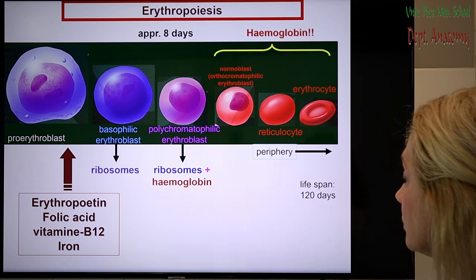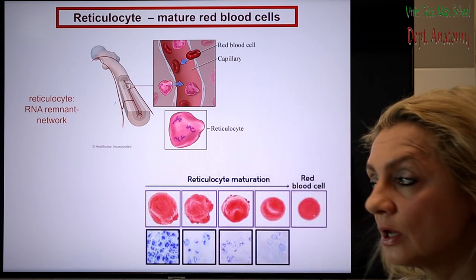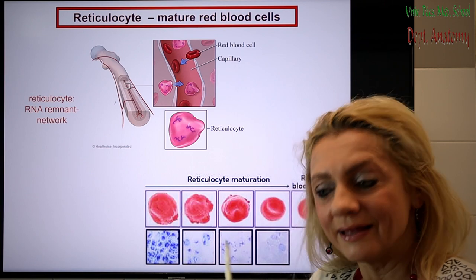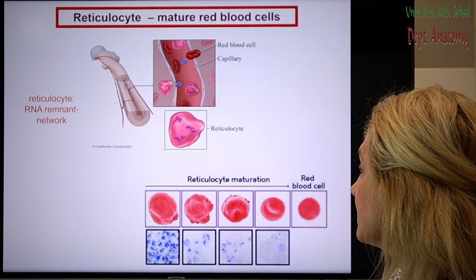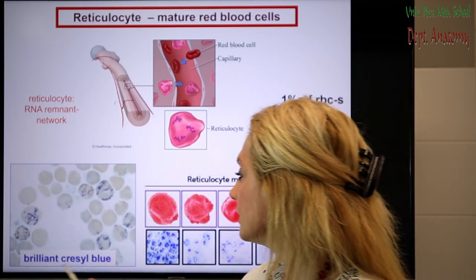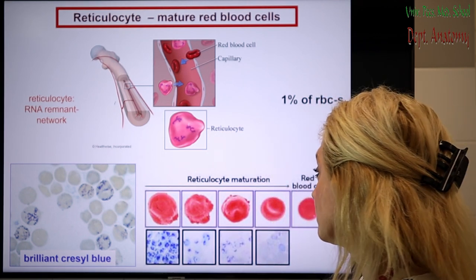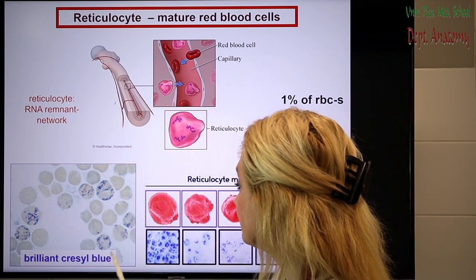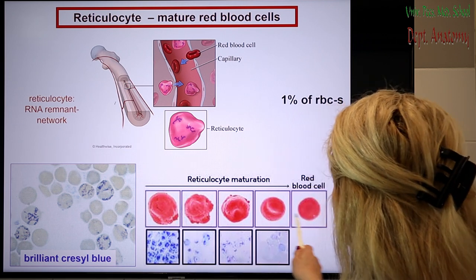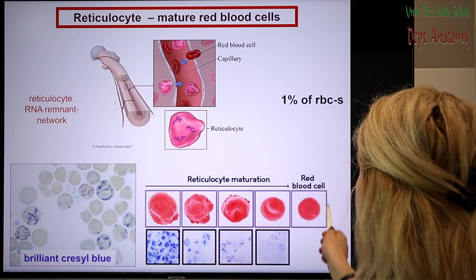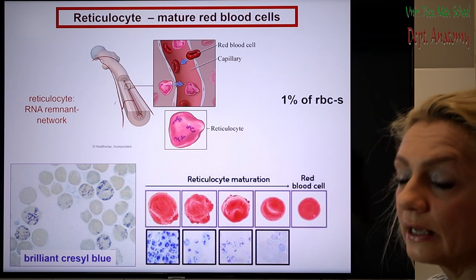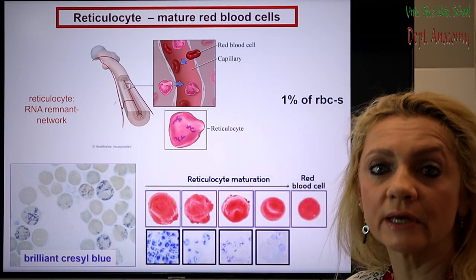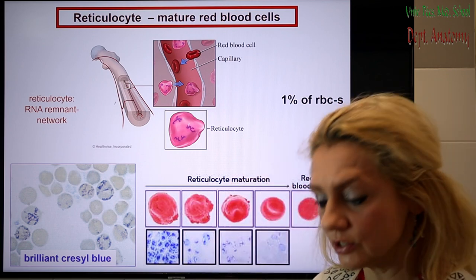Reticulum means network. Reticulocytes contain a network — the remnant of RNA from the ribosomes — in the form of a disappearing network inside the cell, which is not visible with the Giemsa staining but is visible with the Briliant-Cresyl blue staining, a specific staining for reticulocytes. You don't have to distinguish these cells in our preparations, but with this special staining it can be made visible. There is a gradual breakup of this reticulum, and when we reach the mature red blood cell stage it has none left. It's about 1% of the red blood cells, but after blood loss, when the bone marrow becomes more active, we have an increased percentage of reticulocytes.